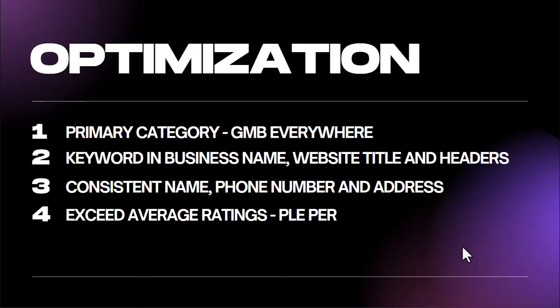Exceeding average ratings means having existing customers actually review the business. Google allows you to ask people for a review through a link. You'll need that link and share it with the client's existing customers so they can give a good rating. The account we set up today isn't approved yet, so I'll use an older Google My Business account we created during the delivery course to show you how the link works.